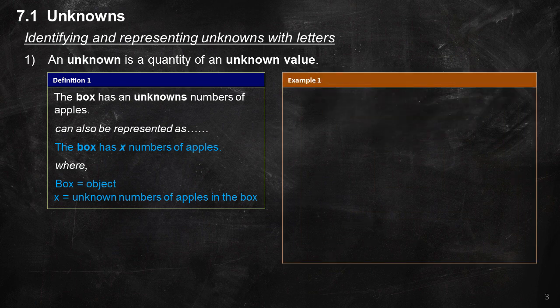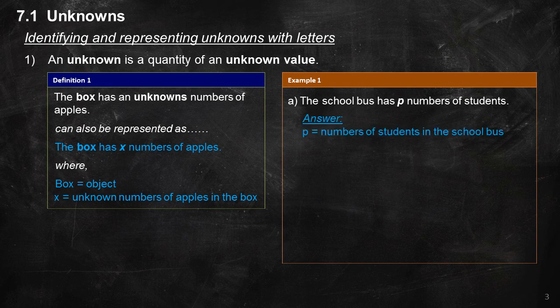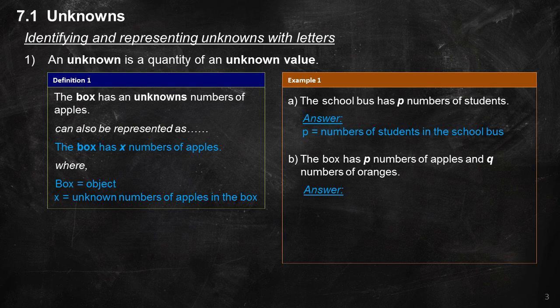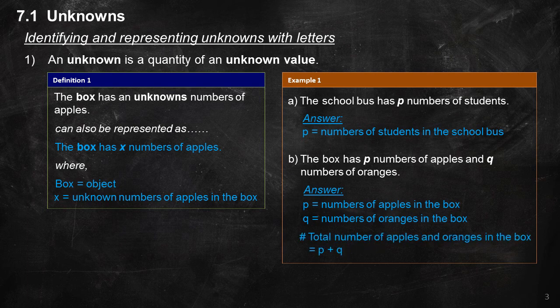Example 1A: The school bus has P numbers of students. Answer: P equals the number of students in the school bus. Example 1B: The box has P numbers of apples and Q numbers of oranges. Answer: P equals the number of apples in the box; Q equals the number of oranges in the box. The total number of apples and oranges in the box equals P plus Q.